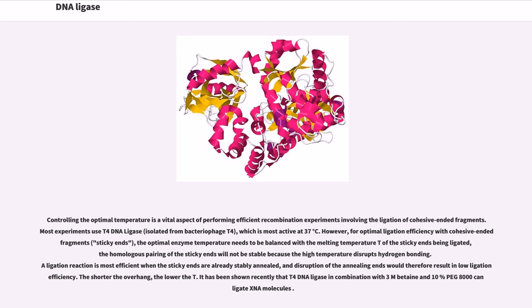The homologous pairing of the sticky ends will not be stable because the high temperature disrupts hydrogen bonding. A ligation reaction is most efficient when the sticky ends are already stably annealed, and disruption of the annealing ends would therefore result in low ligation efficiency. The shorter the overhang, the lower the Tm.